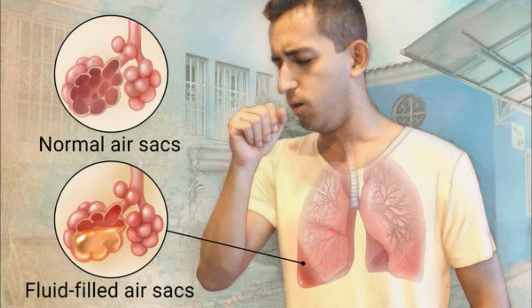Pneumonia is the single largest infectious cause of death in children worldwide. Pneumonia killed 92,136 children under the age of 5 in 2015, accounting for 15% of all deaths of children under 5 years old. Pneumonia affects children and families everywhere, but is most prevalent in South Asia and Sub-Saharan Africa.